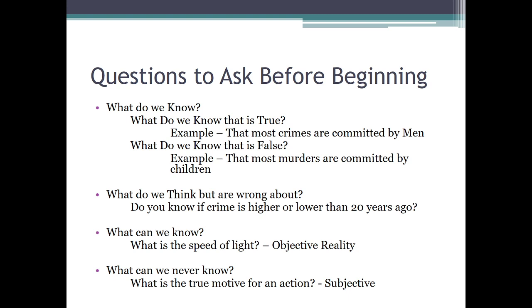What do we think that we are wrong about? An example: if I ask most students whether the crime rate today is higher or lower than it was 20 years ago when their parents were their age, inevitably almost all students will say, well of course crime is higher today — I watch the news, crime is really high. Well, in fact, no. That's incorrect. Crime is — and we're going to see some statistics in this chapter — dramatically lower than it was 20 years ago.